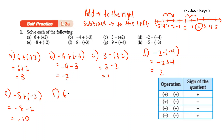6 minus positive 3. Positive and negative, you get negative. So 6 minus 3, you get 3.